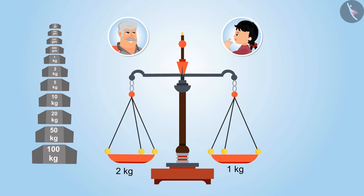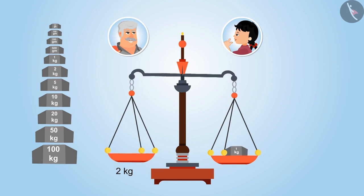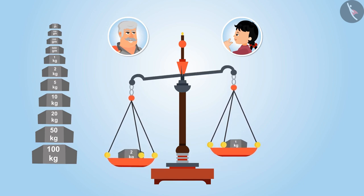Yes uncle, I have understood. The side having more weight will move downwards. This means in this case of one kg and two kg weighing stones, the side carrying one kg will move upwards because it is lighter than the other.